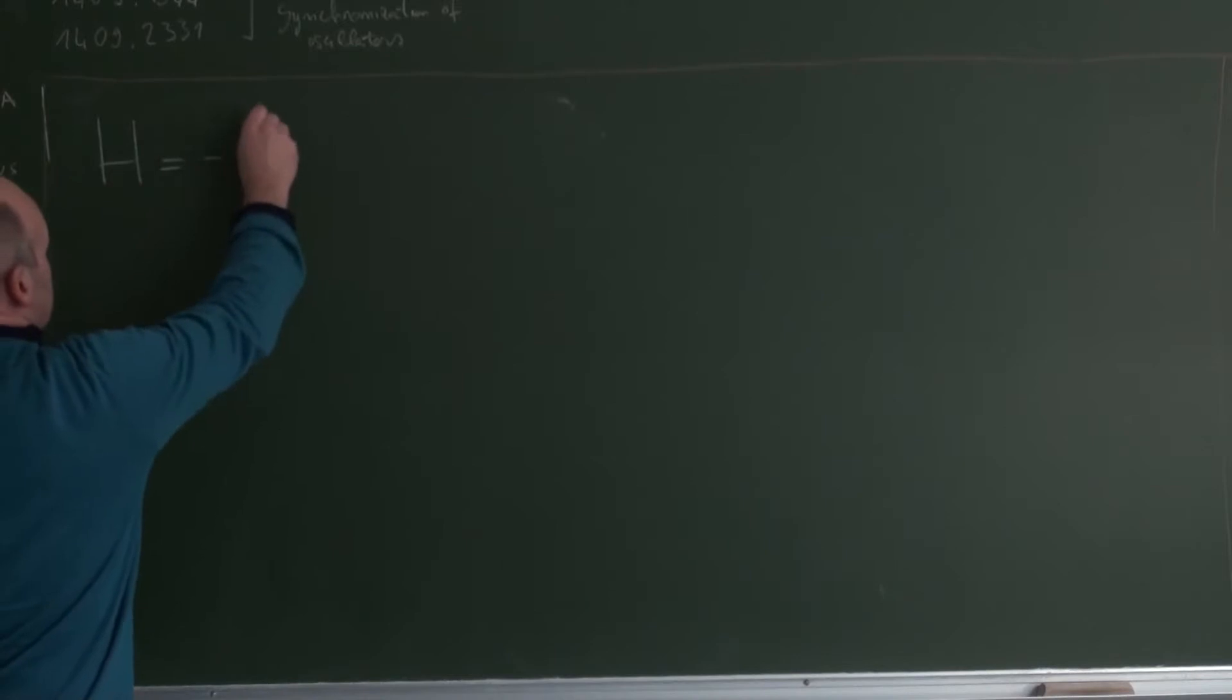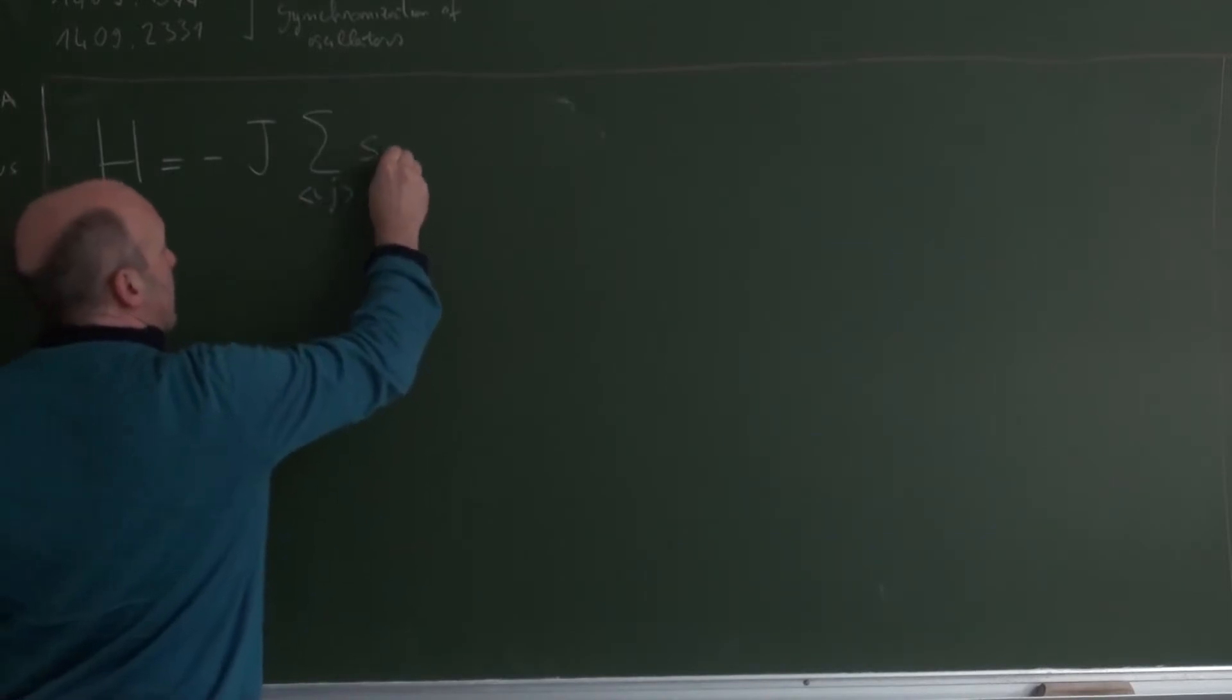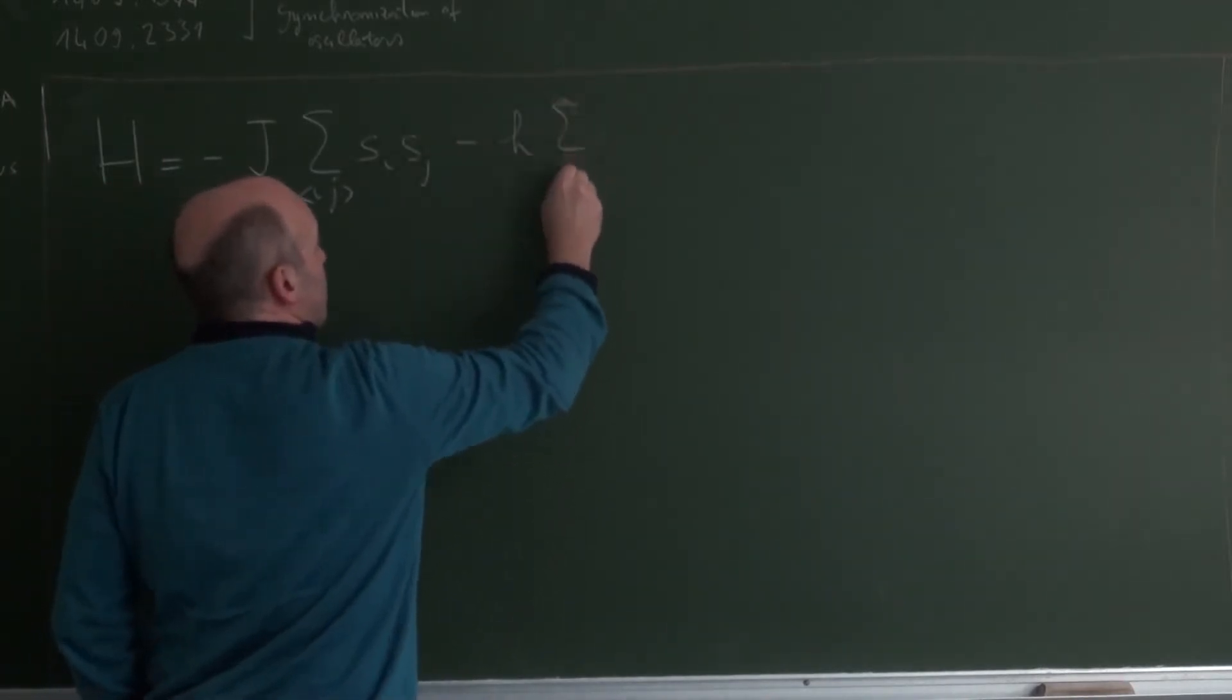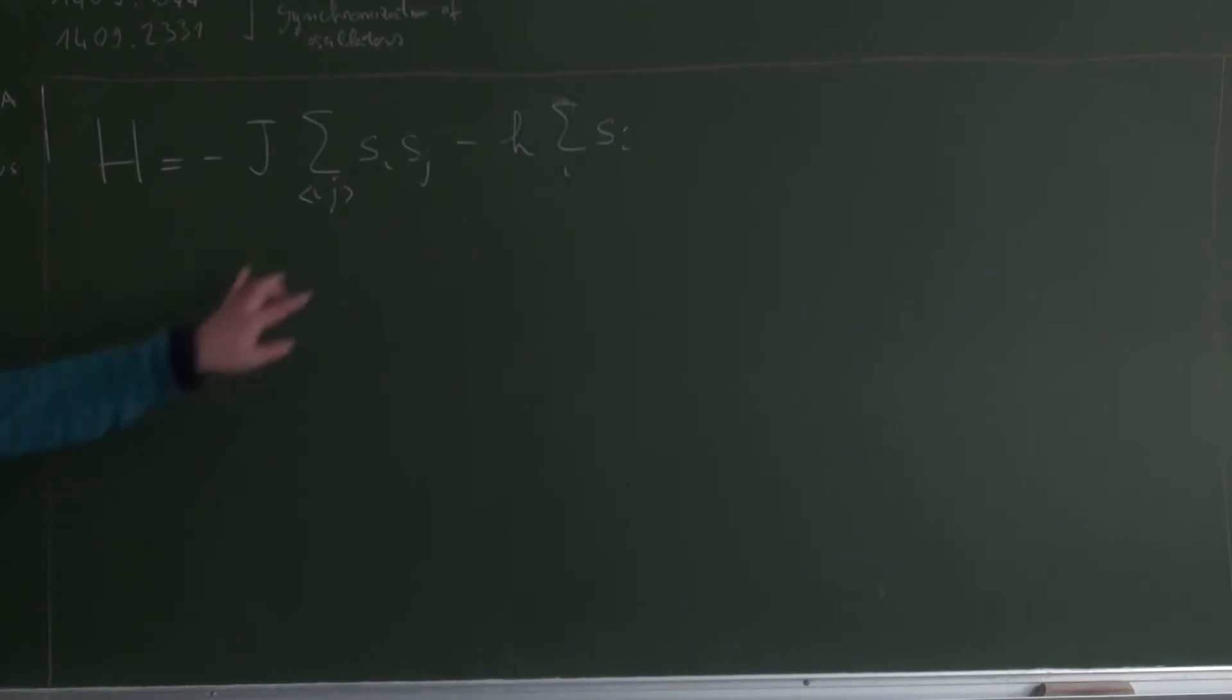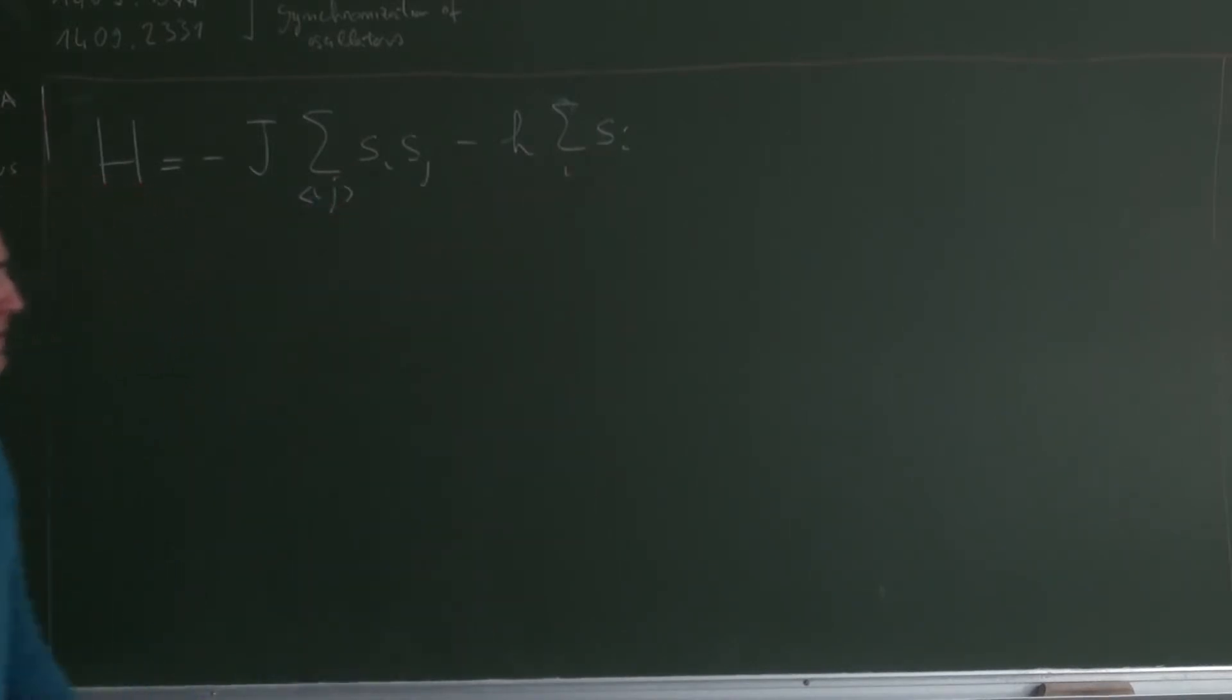H is minus J sum, this means nearest neighbors, Si Sj minus H sum of i Si. So we know the meaning of these terms. The J is the coupling constant and the H is the magnetic field. This is coupling between neighboring spins and this is the magnetic field coupled to each of the spins.